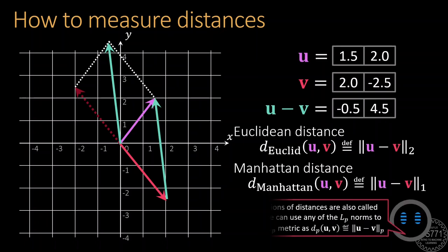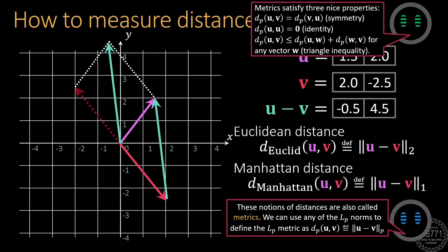Now, it turns out that these notions of distances that we get by calculating the norm of the difference vector are also called metrics. If we use the LP norm to calculate the distance between two vectors, we get what is called the LP metric. Metrics are actually notions of distance that have three nice properties. They have symmetry, which means the distance between a vector U and V is the same as the distance between the vector V and U. It satisfies identity, which means the distance of a vector from itself is zero and also satisfies another interesting property called triangle inequality, which means that it's always shorter to directly go from one point to another than to go via a detour.